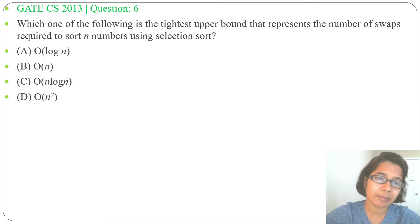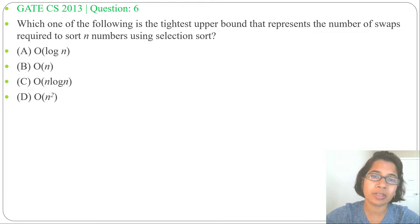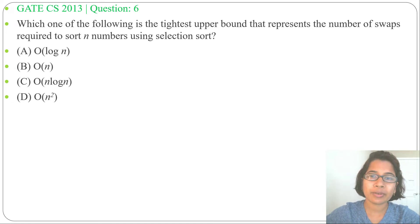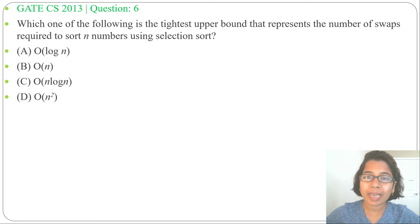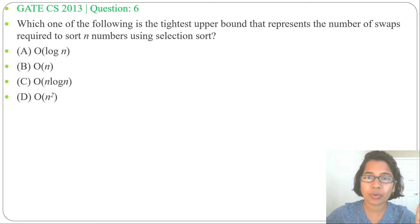As already discussed, in selection sort we select the minimum element and swap it with its correct position. We select the first minimum element and swap it with the first position, then select the second minimum element and swap it with the second position, and so on.